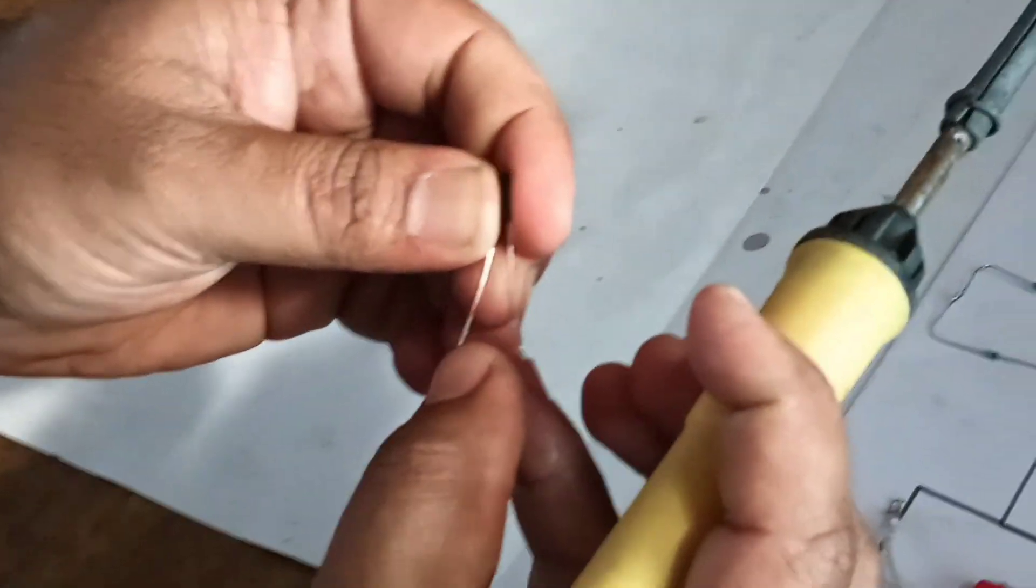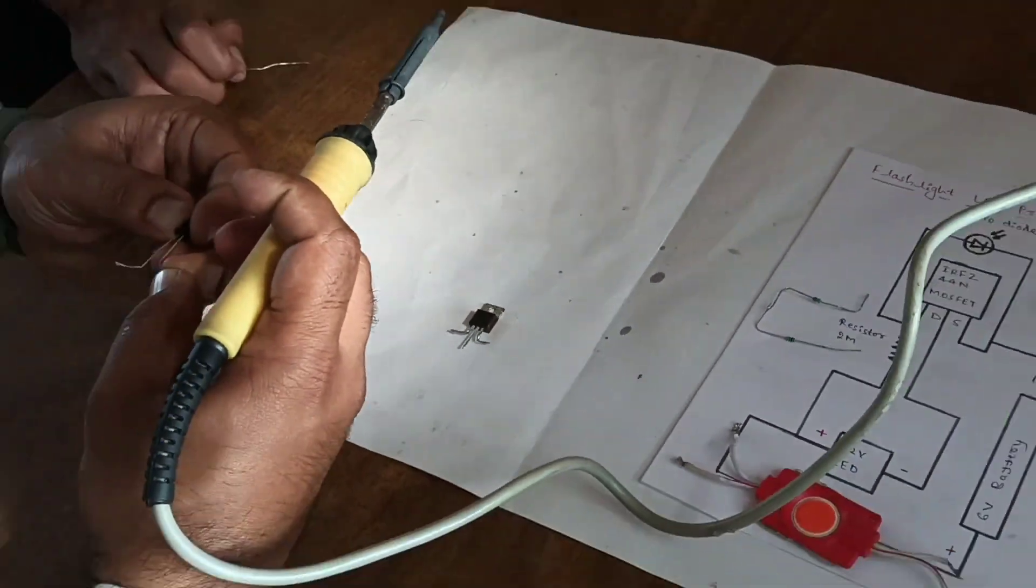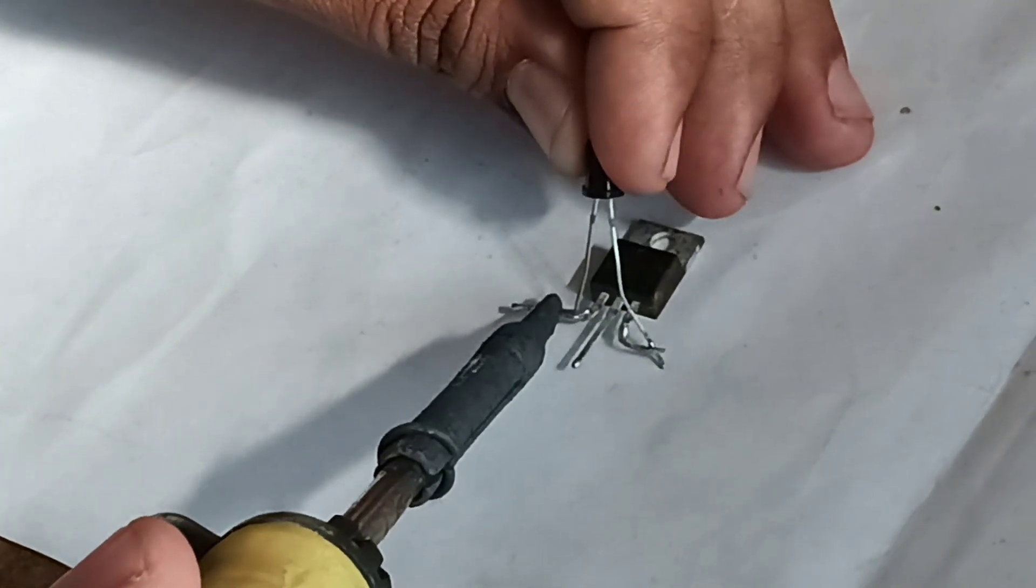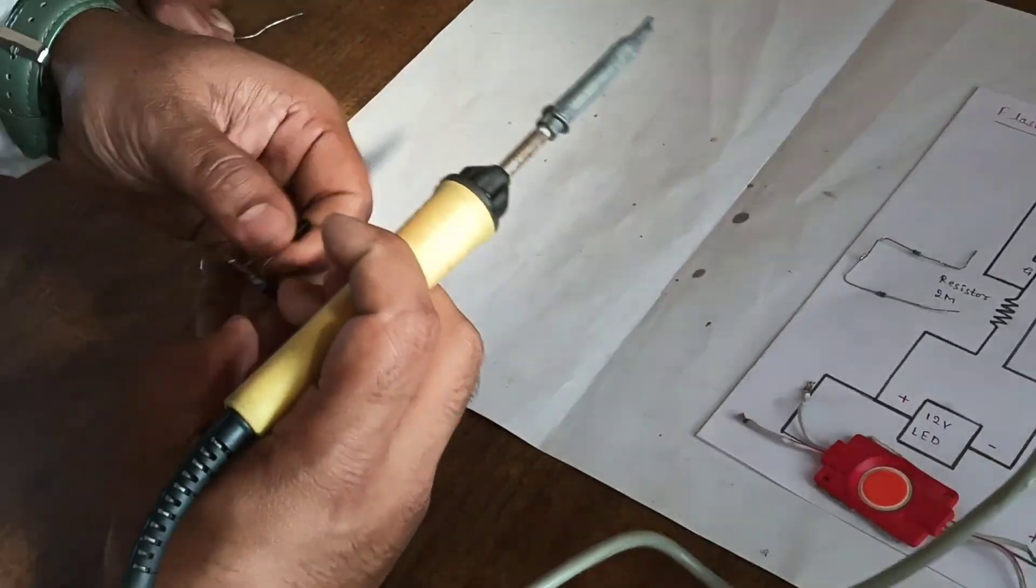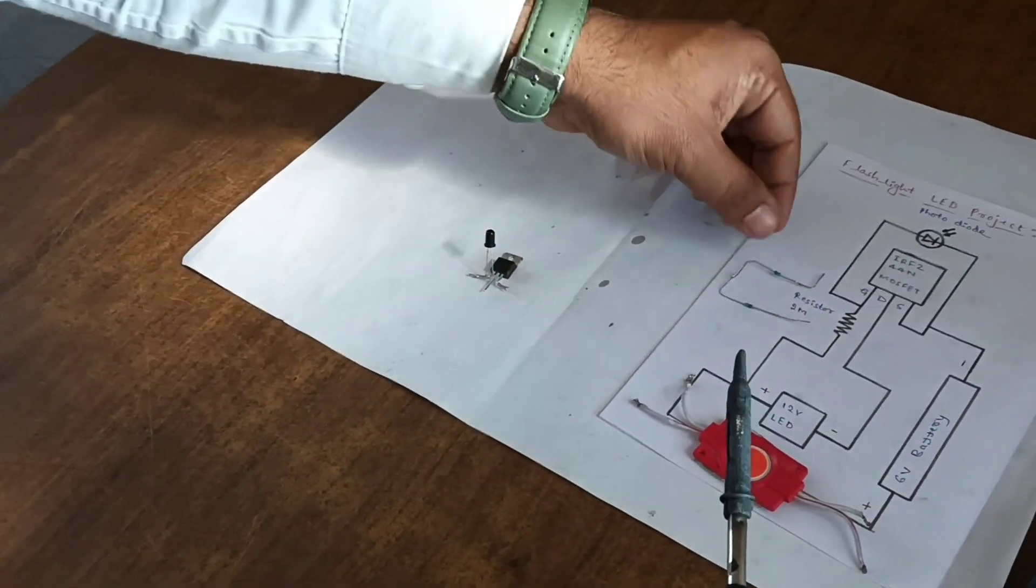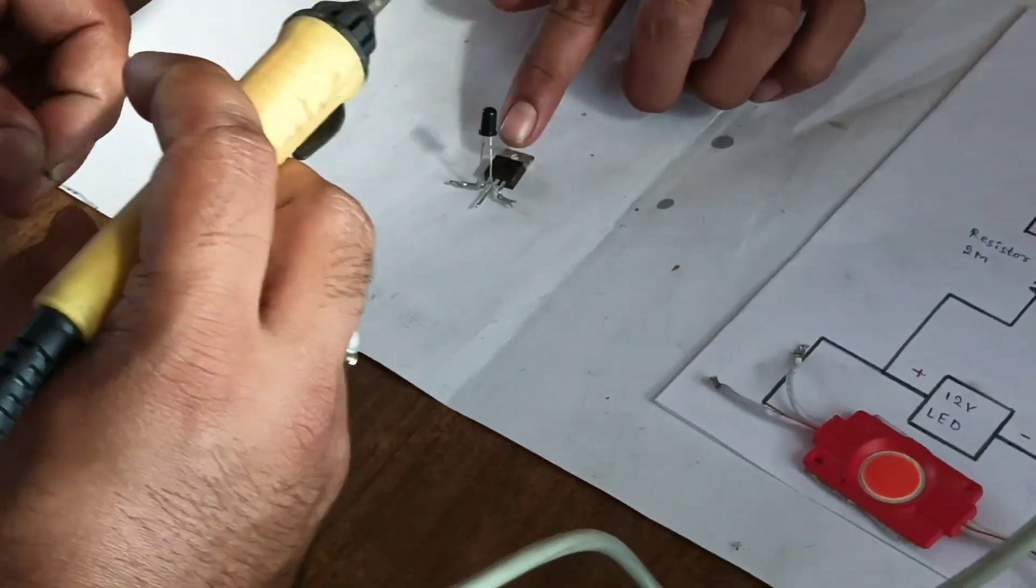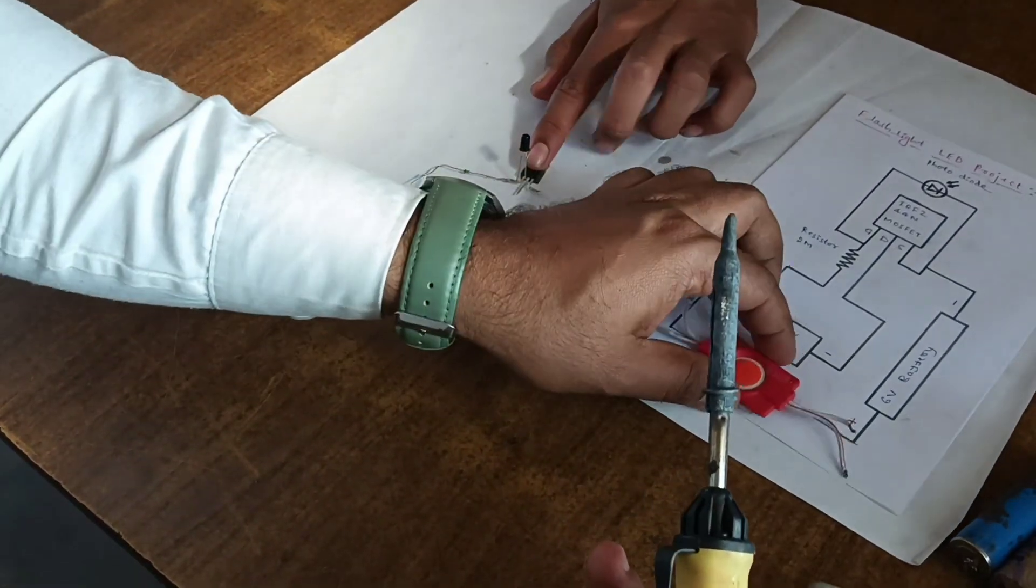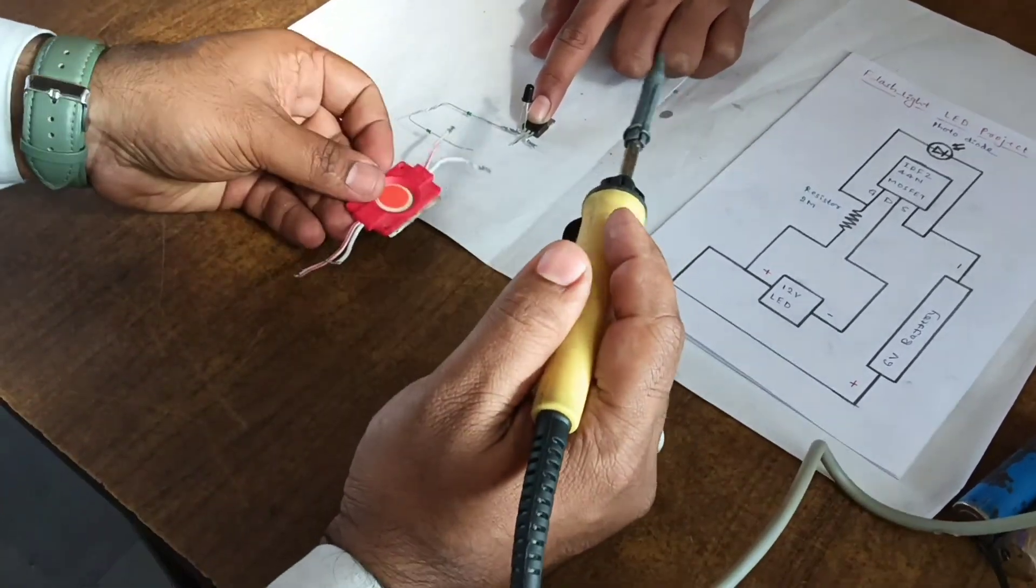Next we connect resistor to gate. Next, LED positive is connected to resistor. This is the positive connected to resistor.